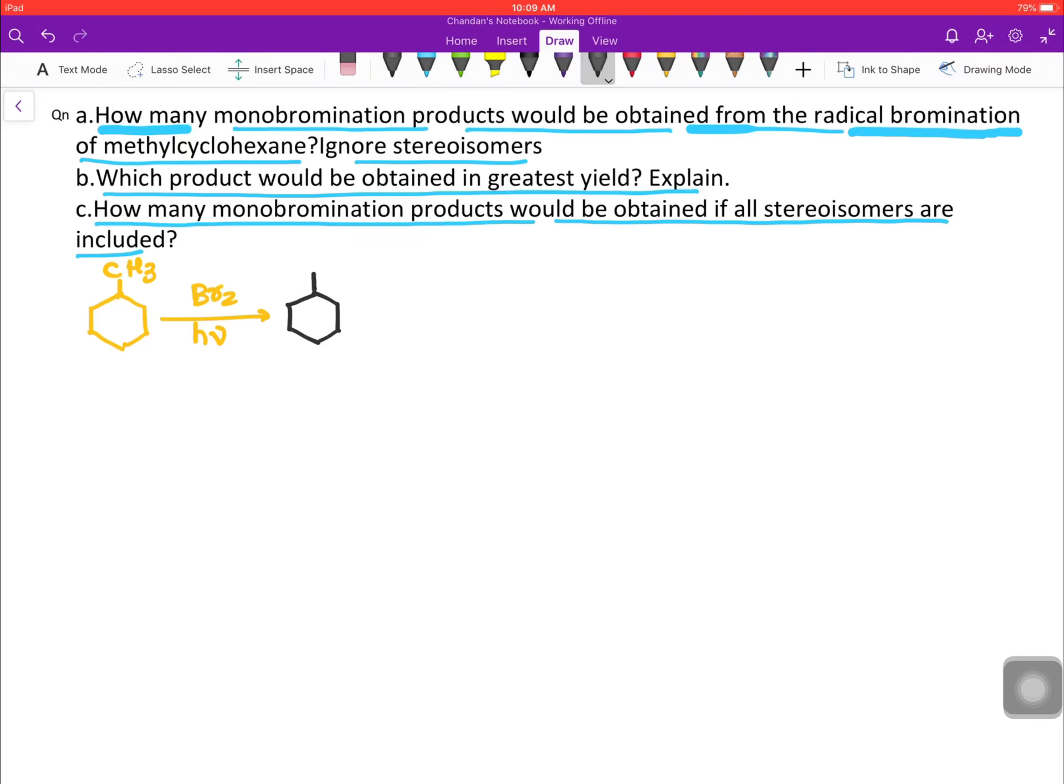One bromination product may be CH₃-CH₂-Br. The second, it can go to this tertiary carbon like this, and here it will form Br. The third, it can go to this position, the first position with respect to methylcyclohexane.